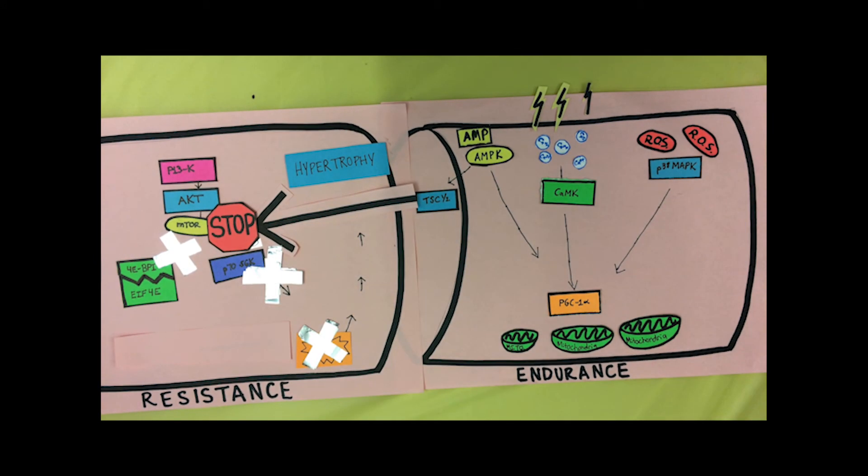Therefore, by activating the aerobic pathway, there is concomitant deactivation of the hypertrophic pathway. The interference between these two pathways is proposed to explain why concurrent training diminishes adaptations away from optimal for a given training stimulus.